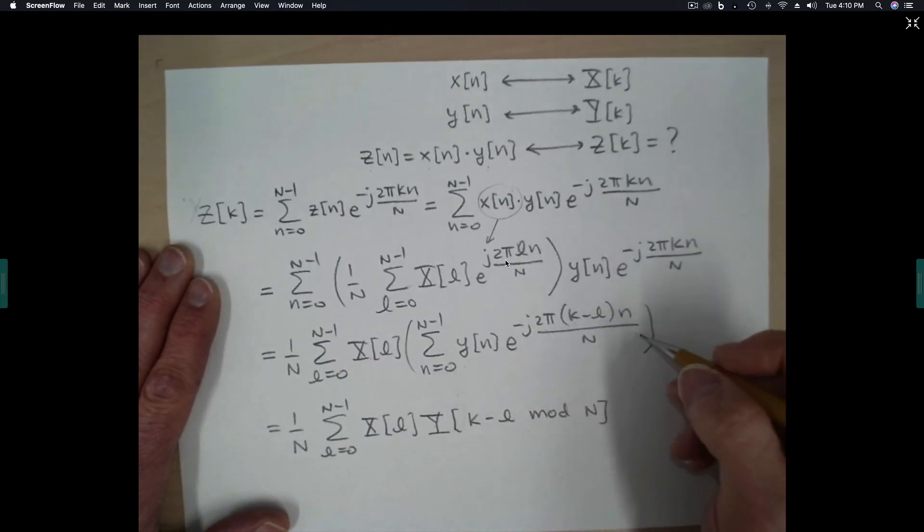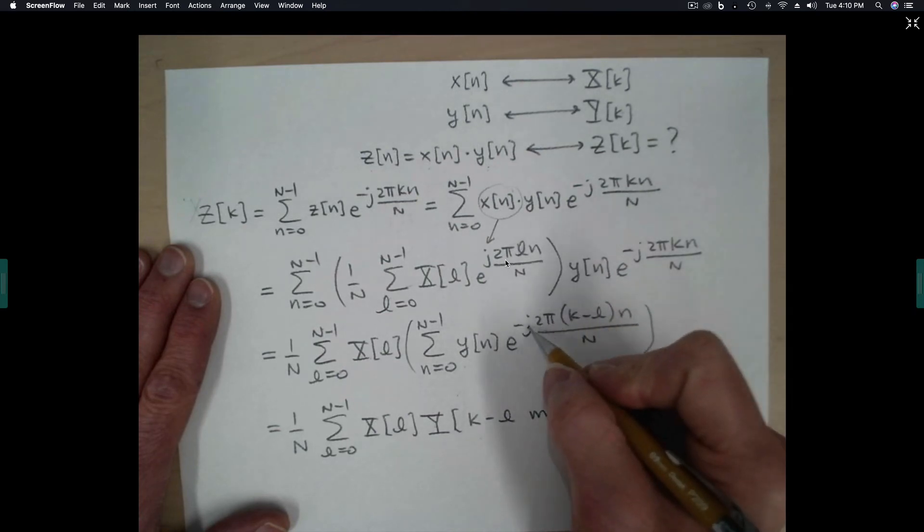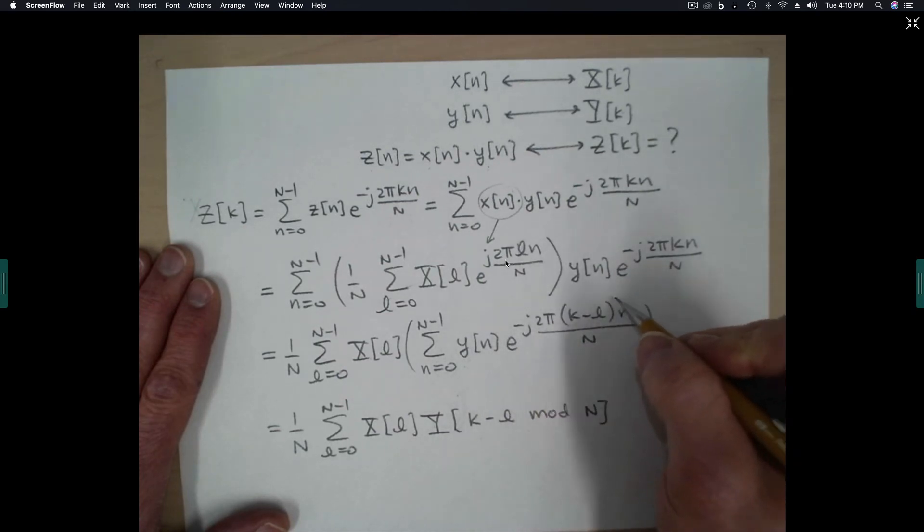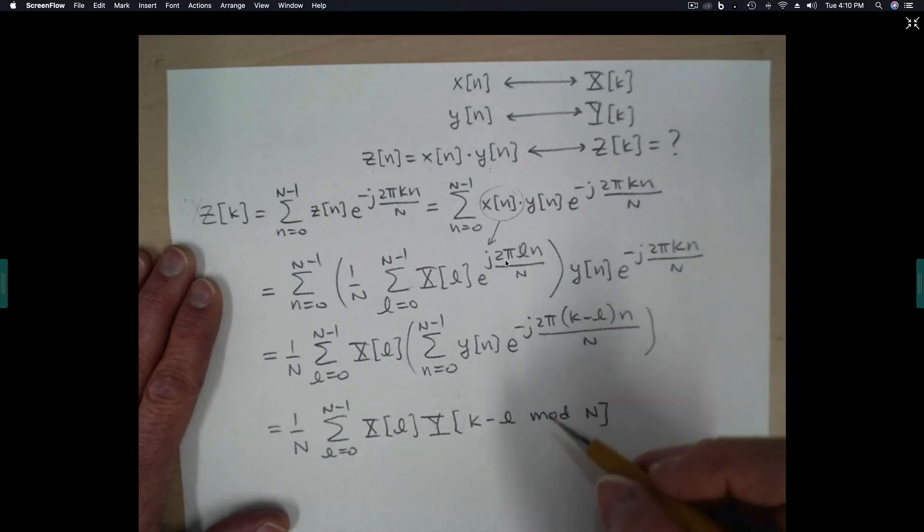Modulo capital N. Once again, we cannot evaluate the sequence y for values outside of the range 0 to n minus 1, and the modulo doesn't do any damage to the complex exponential sequence. It leaves it invariant. And so I've really skipped a step. I should have put the modulo n in the exponential first, and then we could see clearly that that's the definition of y evaluated at k minus L, modulo n.